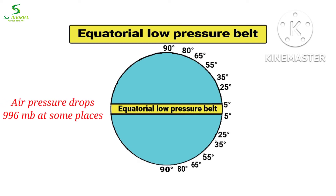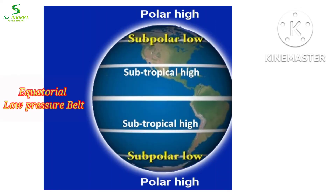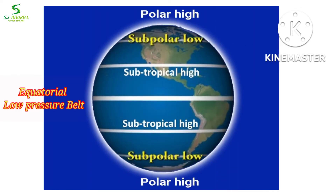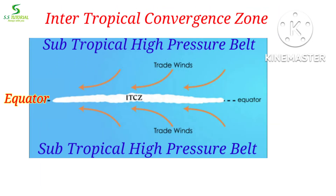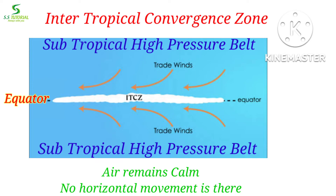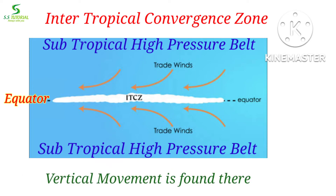Air pressure drops to 996 millibar at some places. Due to lower air pressure in the equatorial region, cold air comes from two subtropical regions to the equatorial low pressure belt and meets together near the earth's surface. The region where air meets together is known as the intertropical convergence zone, or doldrums. There is no horizontal movement of air, but vertical movement can be seen there.